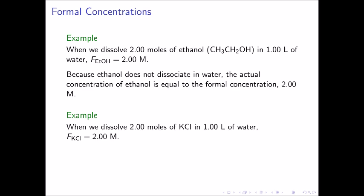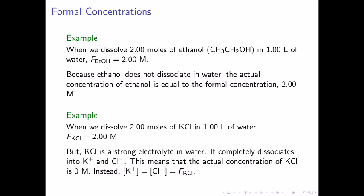As a second example, we consider potassium chloride. If we dissolve 2.00 moles of potassium chloride in 1 liter of water, the formal concentration of the potassium chloride is 2.00 molar. However, potassium chloride is a strong electrolyte in water. This means it completely dissociates into potassium ions and chloride ions. For this reason, the actual concentration of potassium chloride in solution is 0 molar. Rather, the potassium ion and chloride ion concentrations equal the formal concentration of potassium chloride.